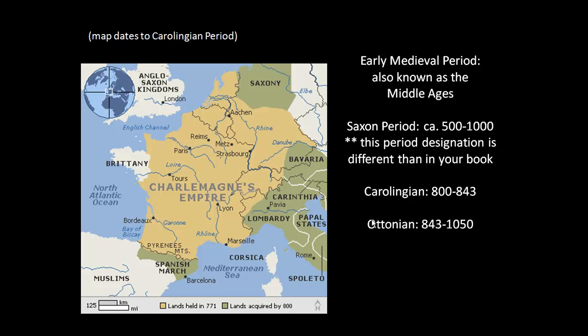I have a few examples of work from the Carolingian period, and then in a separate lecture we will look at art produced in the Ottonian period. The Carolingian period is rather short, approximately 43 years, and that is due to some dynastic infighting that happens at the end of the period.